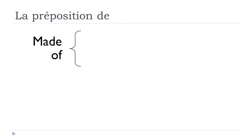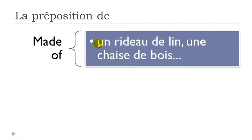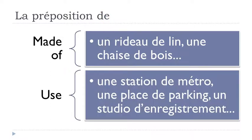When you want to say something is made of something, you also use the preposition de. For instance: un rideau de lin — rideau means curtain, lin means linen — a linen curtain. Second example: une chaise de bois — bois means wood — a wooden chair. So when things are made of a material, use de.